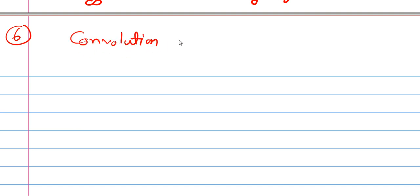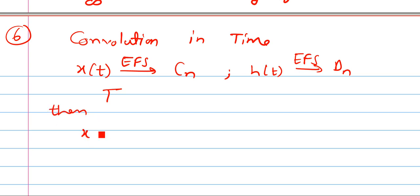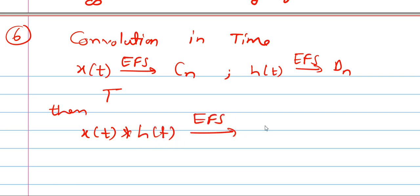Property number 6 is convolution in time. Suppose X of t has exponential Fourier series coefficient Cn, and another signal H of t has coefficient Dn. Both signals have period T. Then X of t convolved with H of t has exponential Fourier series coefficient T times Cn times Dn. Convolution in one domain gives multiplication in another domain, multiplied by the time period.